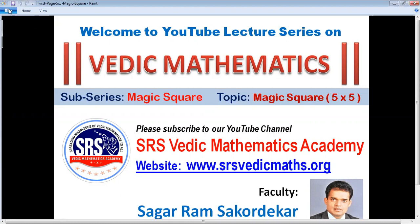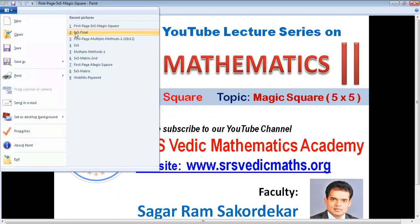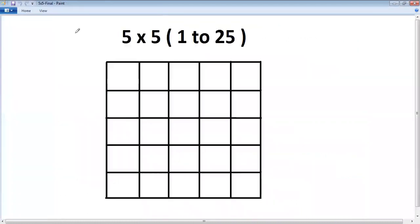Let's learn 5 by 5 Magic Square. Note this 5 by 5 here refers to 5 rows, 5 columns. So 5 into 5, there are total 25 boxes here. We have to fill all these 25 boxes with numbers 1 to 25, such that totals of each row, each column, and both diagonals are the same.